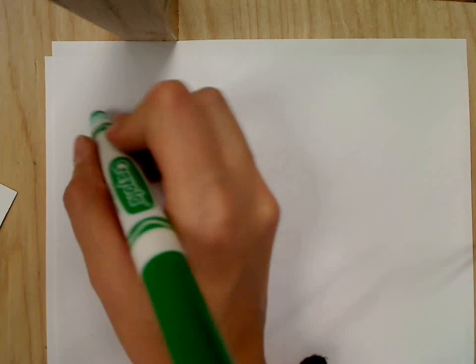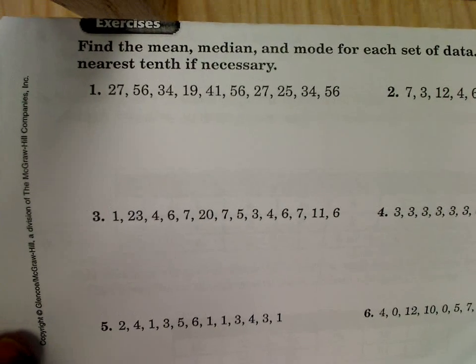Okay, so for number one, we have a list of how many numbers are in my list? Good, ten numbers in my list, which means how many will I divide by? Ten. Okay, there's my ten numbers.